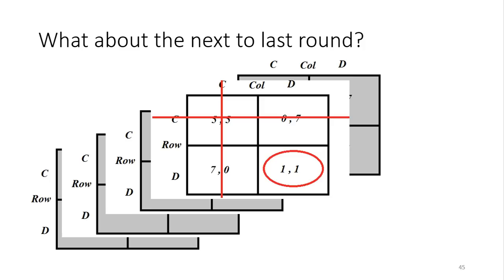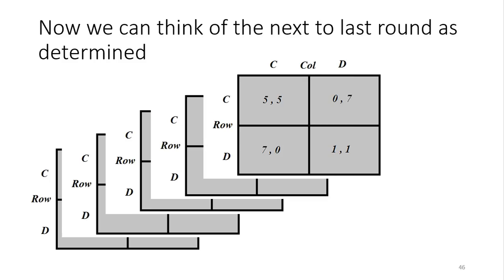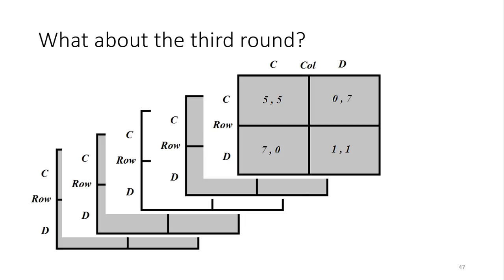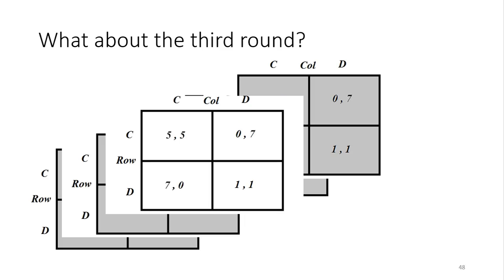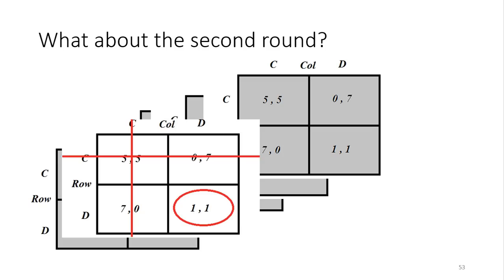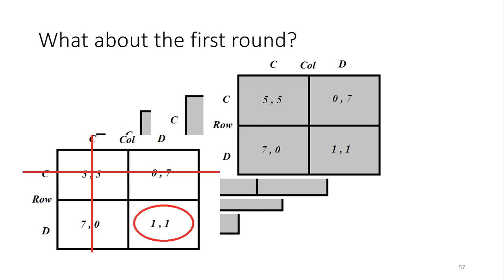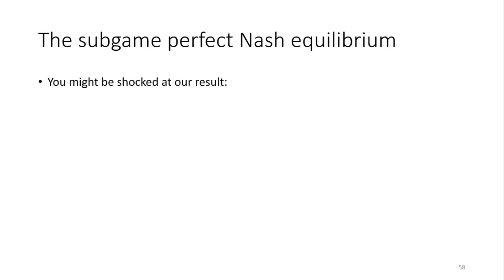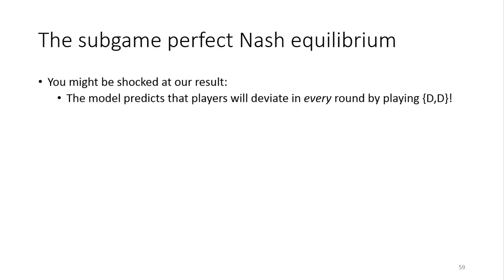We can just keep applying this iteratively backwards. In the third round, if the fourth and fifth rounds are determined and the first and second have already been played, it's as if I'm playing the third round once. We know what happens — you play the static outcome of deviate, deviate. The same logic applies to the second round, and the same logic applies to the first round. So the model predicts that players deviate in every single round by playing DD.